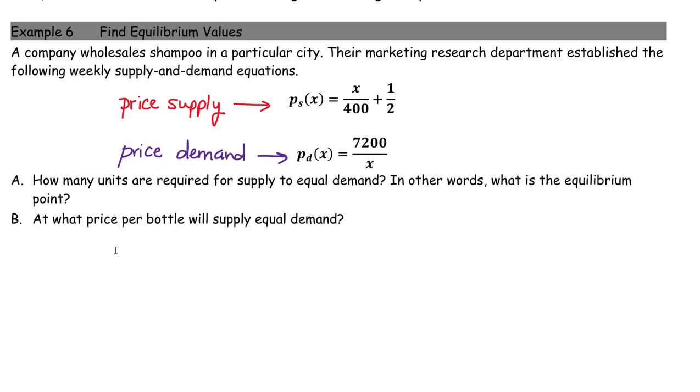And we're asked how many units are required for supply to equal demand, which is also known as the equilibrium point. So to solve this problem, we're going to need to set the price supply equation equal to the price demand equation. In other words, we know that X over 400 plus one-half has to be equal to 7,200 over X.